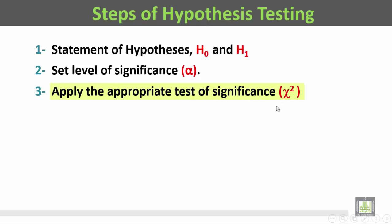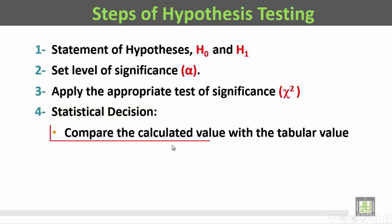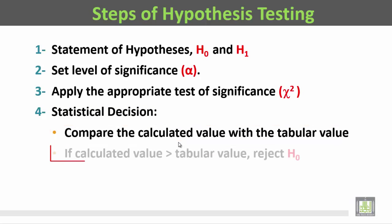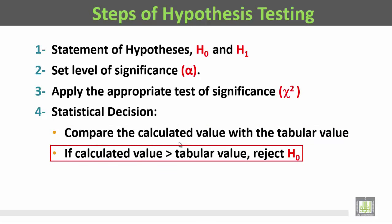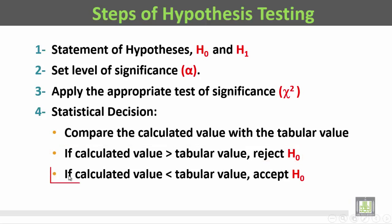The last step is the statistical decision. We are going to compare the calculated value with the tabular value. If the calculated value proves to be more than the tabular value, we are going to reject the null hypothesis (H₀). And if the calculated value is less than the tabular value, we are going to accept the null hypothesis.